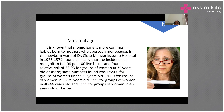Regarding maternal age: mongolism (Down syndrome) is more common in babies born to mothers approaching menopause. A study found the incidence of mongolism at 1.08 per 100 live births, with a relative risk of 26.93 for women aged 35 or older. However, with the advent of IVF, pre-implantation genetic testing (PGT) is now performed on embryos, effectively eliminating this risk.